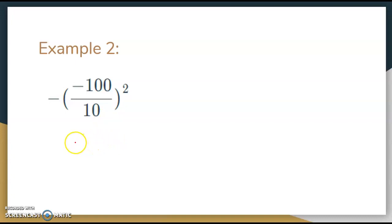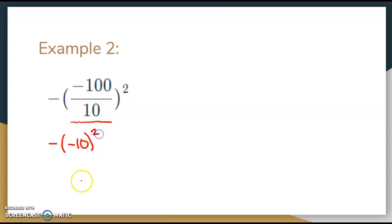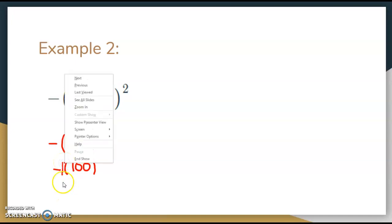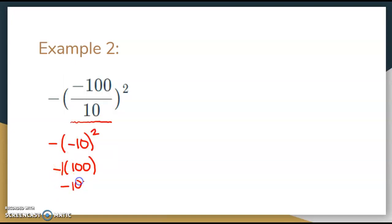Let's try another example. Start with your grouping symbols — anything inside the parentheses. Negative 100 divided by 10 gives me negative 10 squared. Next step, exponents: negative 10 squared is positive 100. Now my last step is actually multiplication. You can't see it here, but there's a negative 1 right in front. Negative 1 times 100 gives me negative 100. So my solution there would be negative 100.